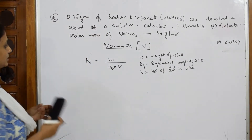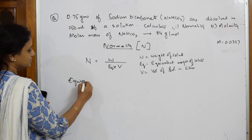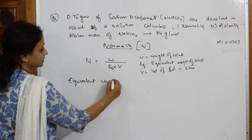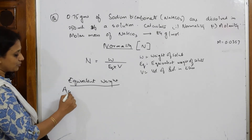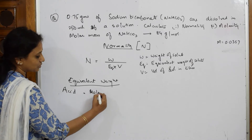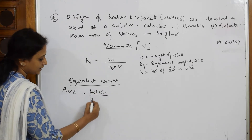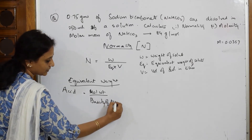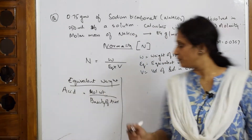Equivalent weight varies with acids, bases, and salts. For an acid, the formula is: equivalent weight = molecular mass divided by basicity of the acid.